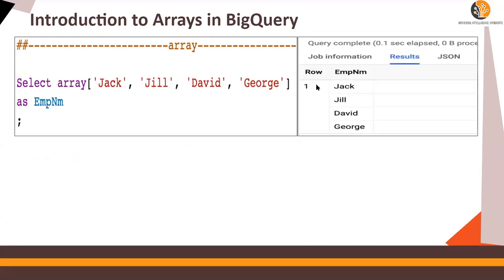To create an array, all you have to use is the keyword ARRAY. So SELECT ARRAY of Jack, Jill, David, and George as employee_name. The output would be: employee_name — Jack, Jill, David, and George.